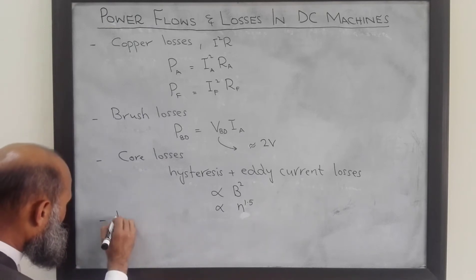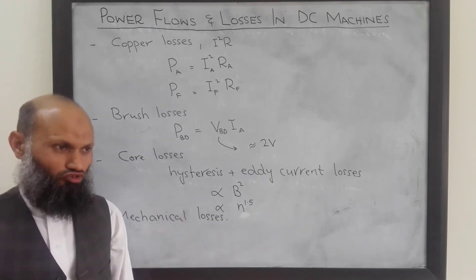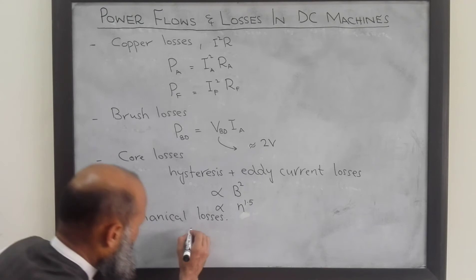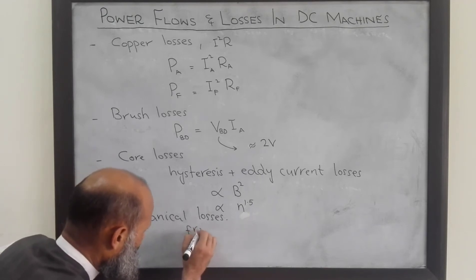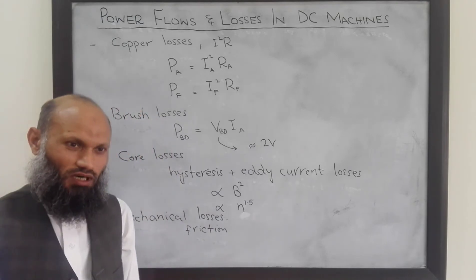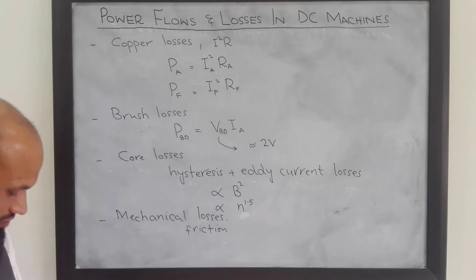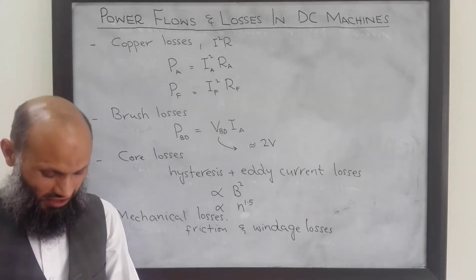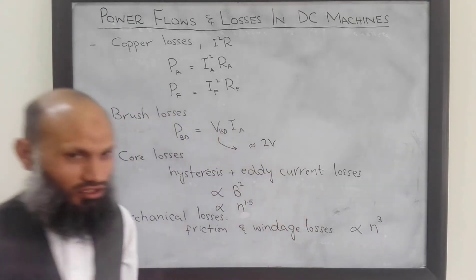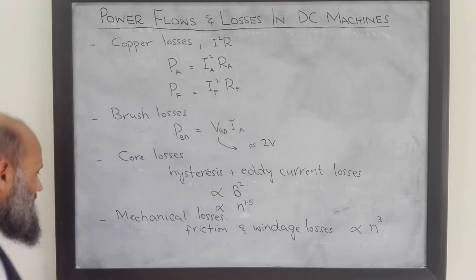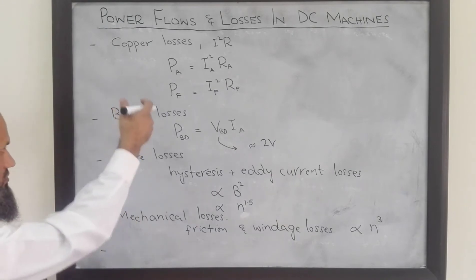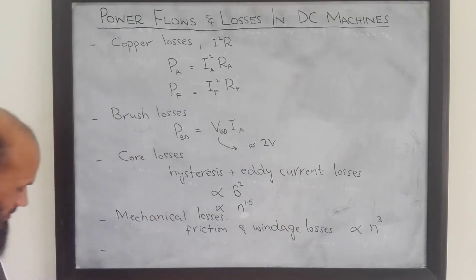Then we have mechanical losses. There are moving parts with friction between them, causing friction power losses. There is also friction between moving parts and the air, called windage loss. It has been found experimentally that these mechanical losses are proportional to the cubic power of the rotational speed. There are also other losses that cannot be categorized into these groups; these are called stray losses.